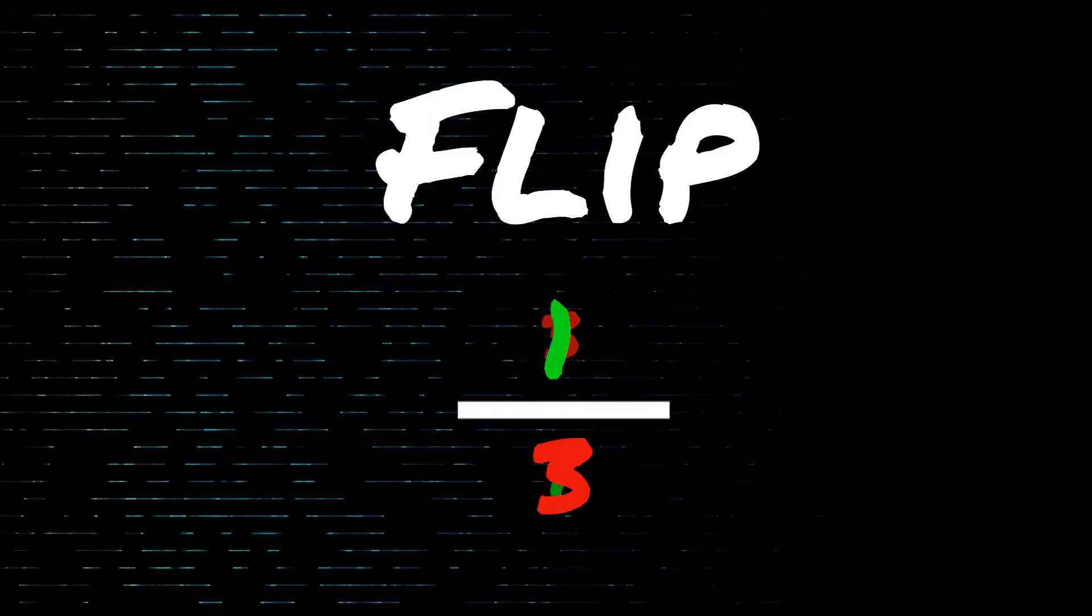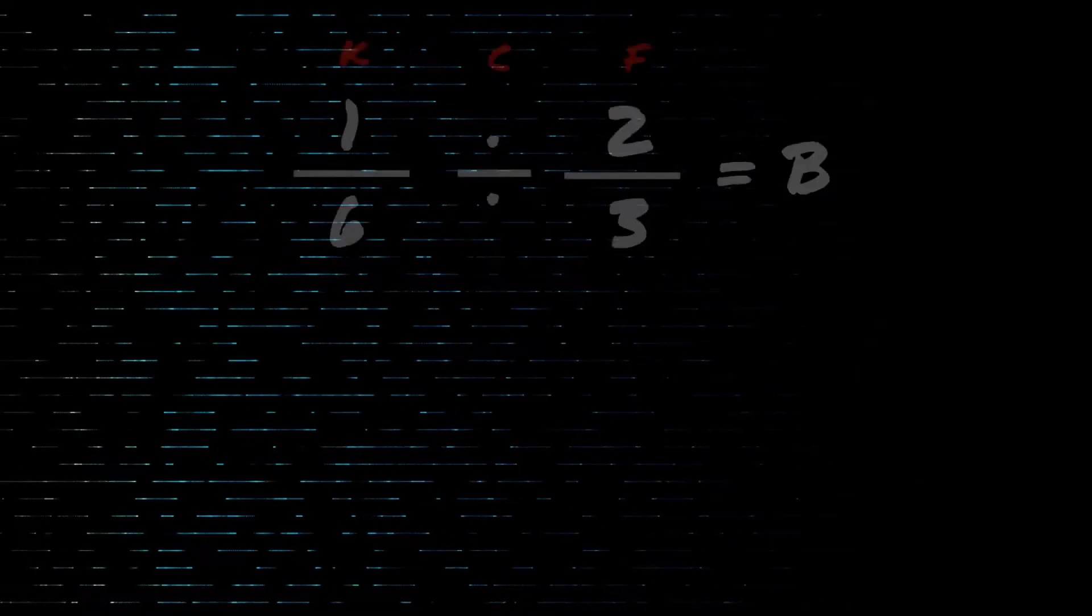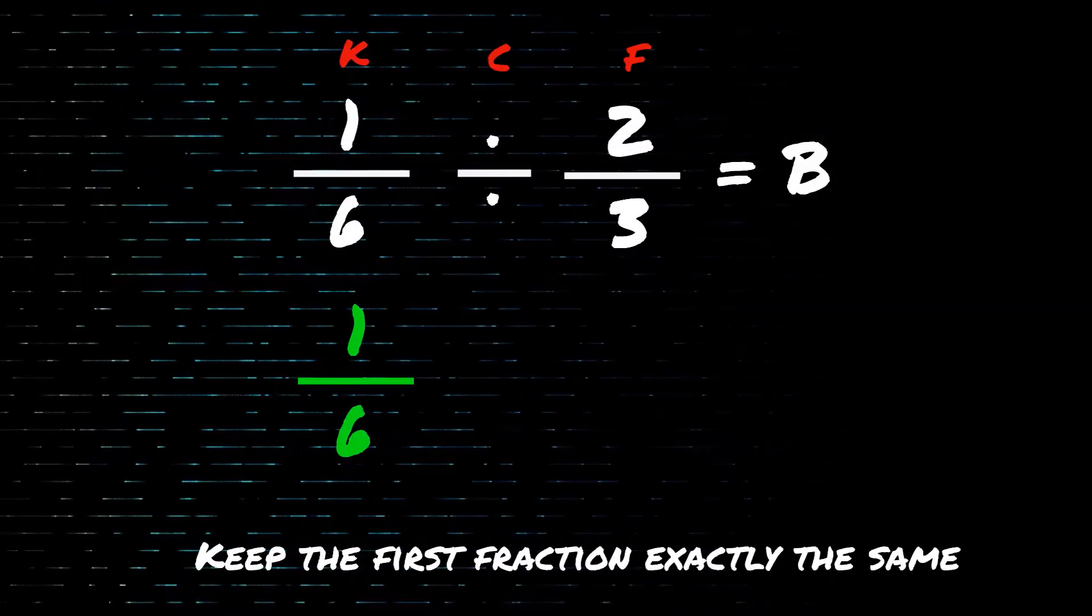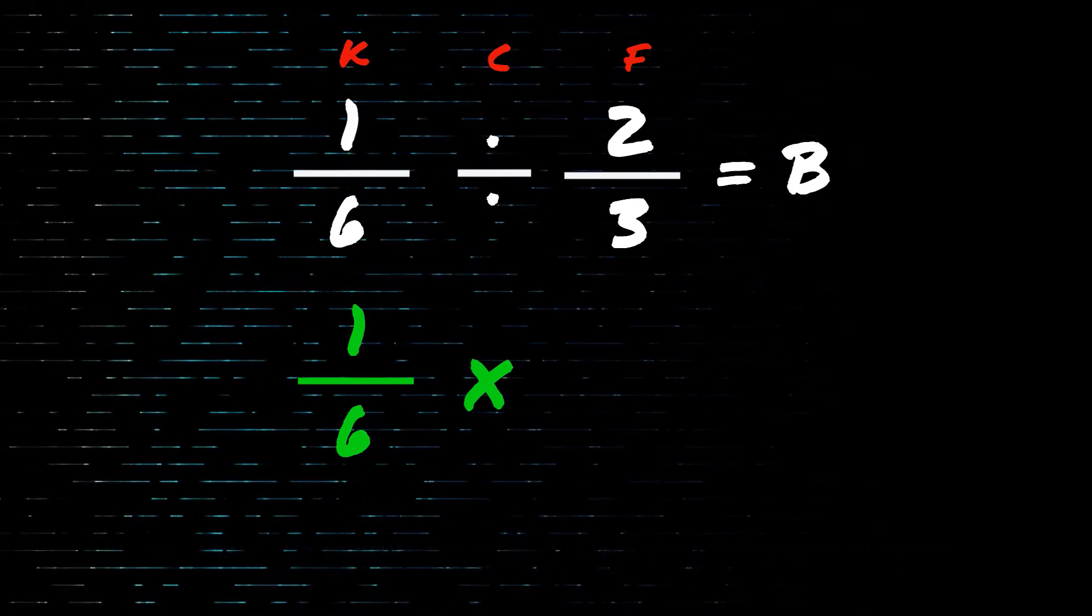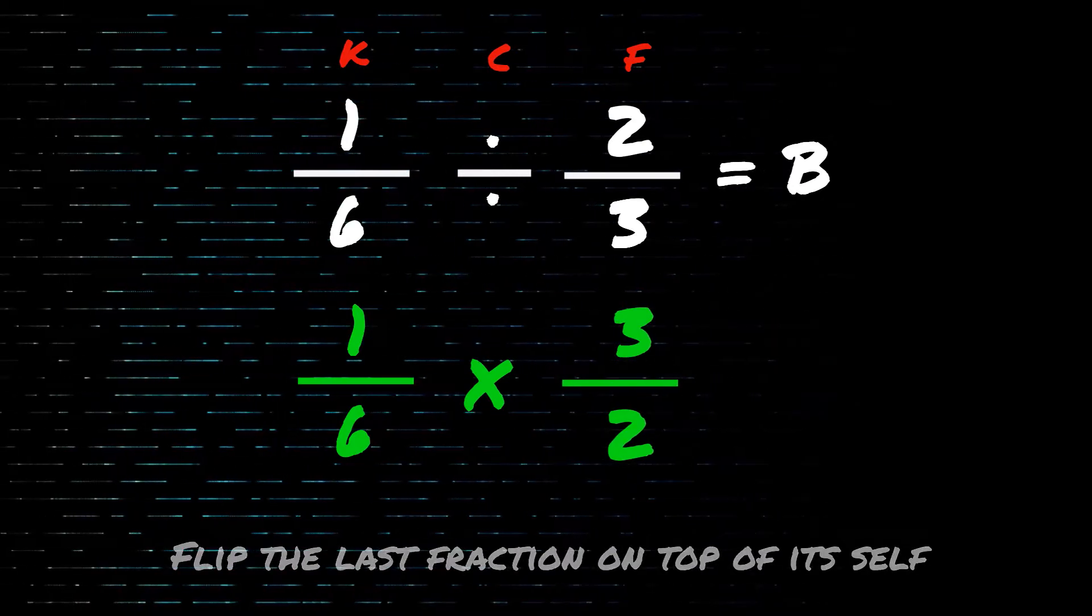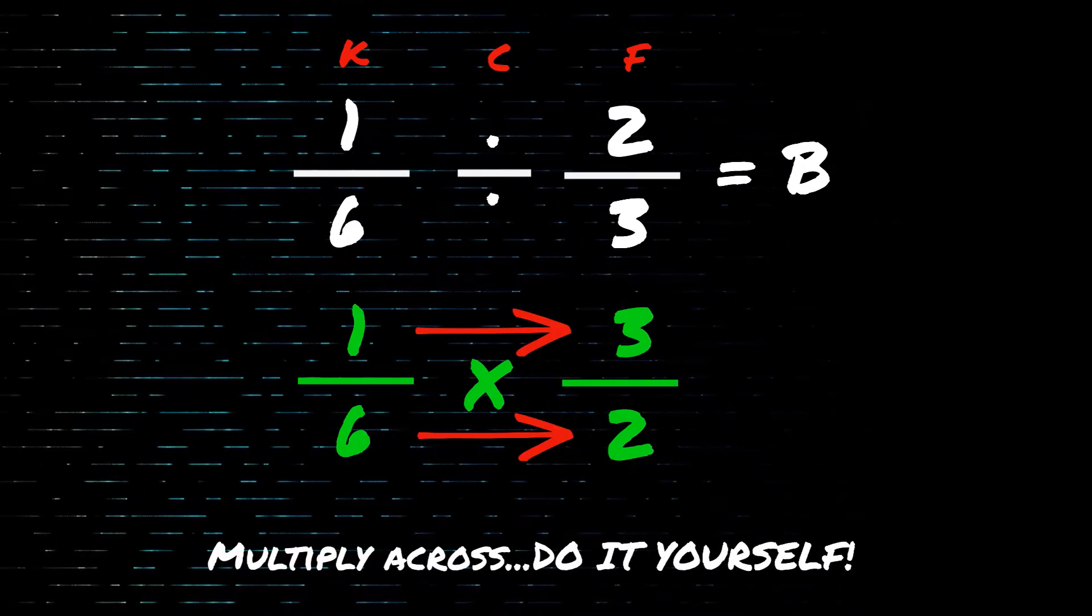Keep the first fraction exactly the same. See the division sign and change its name. Flip the last fraction on top of itself. Now multiply across, do it yourself.